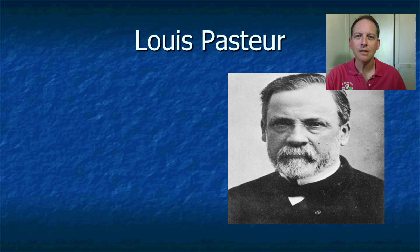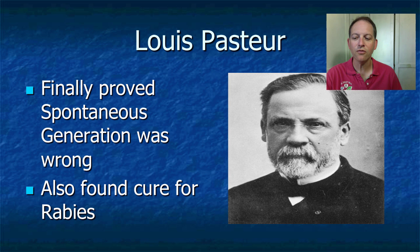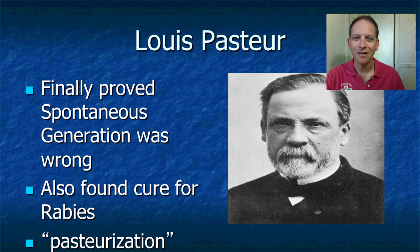Scientists didn't believe Redi, and it took well over 200 years before they finally got around to it. This guy finally proved that spontaneous generation was wrong — his name was Louis Pasteur. Pasteur sounds like something else we'll get to in a second. He also came up with a cure for rabies, and he developed pasteurization. Ask me in class what he pasteurized before milk and the reasons for that.